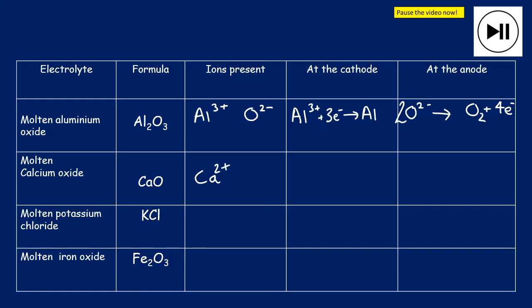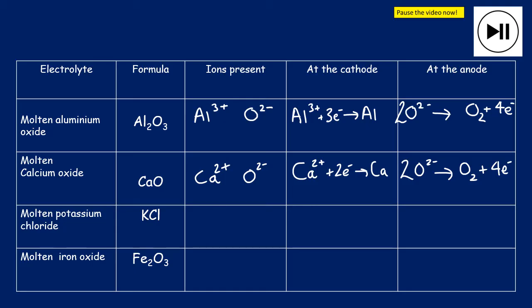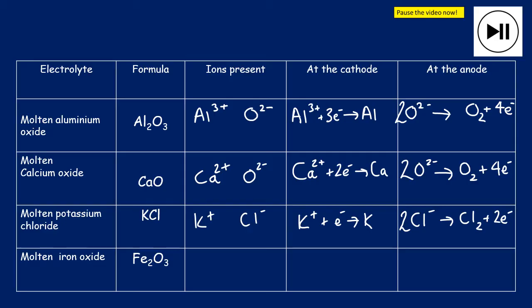For molten calcium oxide: ions are Ca²⁺ and O²⁻. At the cathode, calcium ions gain two electrons: Ca²⁺ + 2e⁻ → Ca. At the anode: 2O²⁻ → O₂ + 4e⁻. For molten potassium chloride: ions are K⁺ and Cl⁻. At the cathode: K⁺ + e⁻ → K (potassium metal). At the anode: 2Cl⁻ → Cl₂ + 2e⁻. Notice that at the cathode, electrons are on the left (being gained), and at the anode, electrons are on the right (being lost).